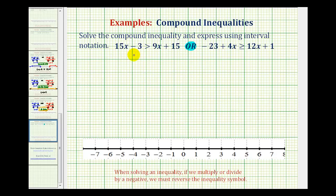To do this, we're going to solve each of these and then graph both solution sets on the number line and then interpret the results. So we'll first solve 15x minus 3 is greater than 9x plus 15, and then we'll solve negative 23 plus 4x is greater than or equal to 12x plus 1.